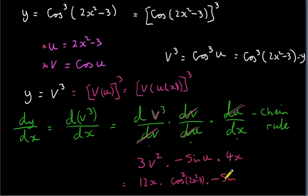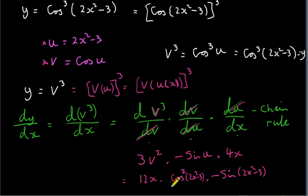Then we have multiplied by minus sine u. That's minus sine of 2x squared minus 3. And I've already brought the 4x to the front. So just to tidy this up, all we've got to do is just bring the minus sine to the front.